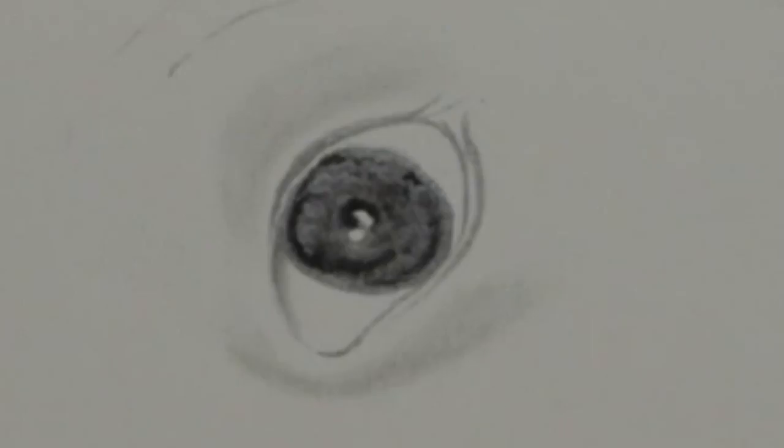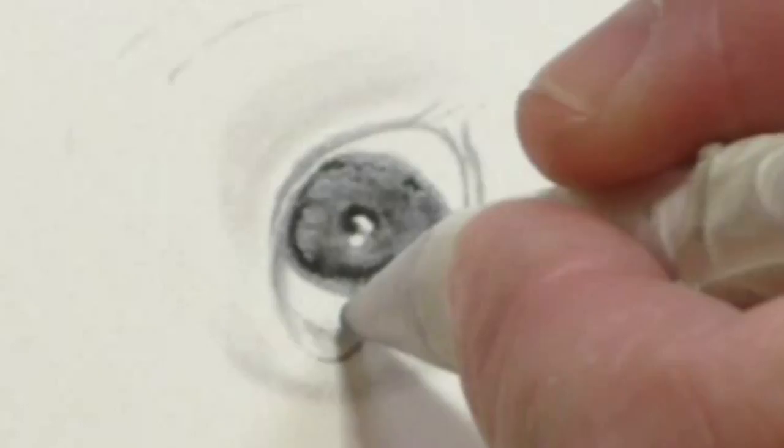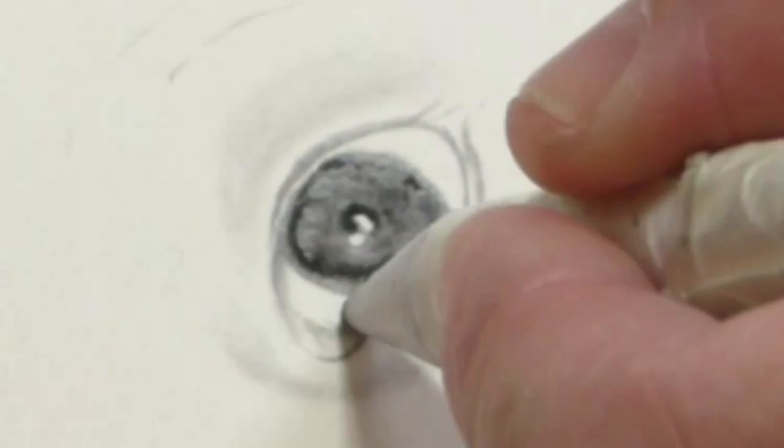There we go. Okay. Even though our eyeballs are white, we've got shadows cast over them. So I'm going to go in quite lightly with the paper stump this time and just add a little bit of shade, because this is what will give the eyeball its form.